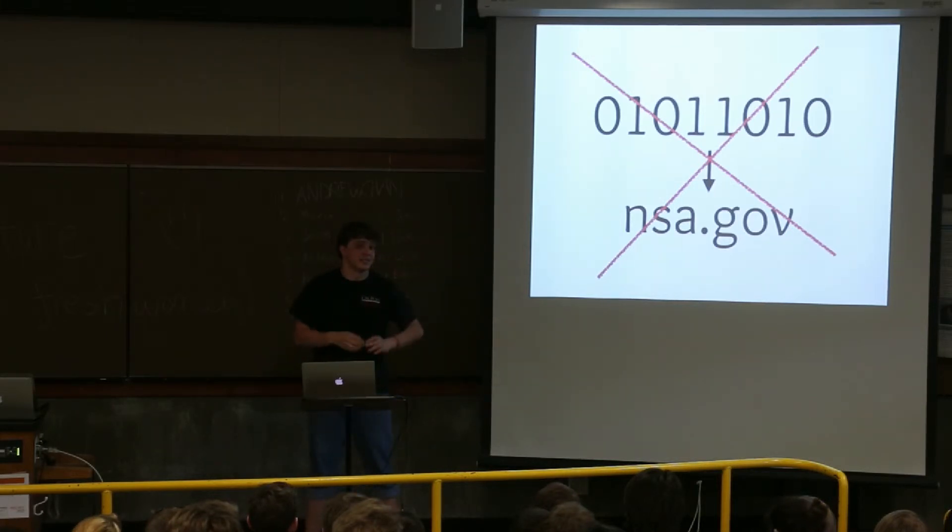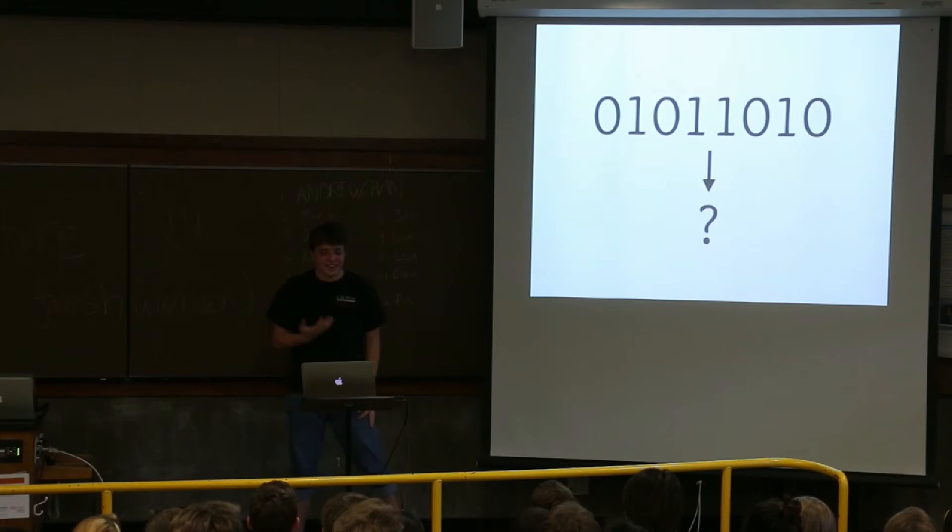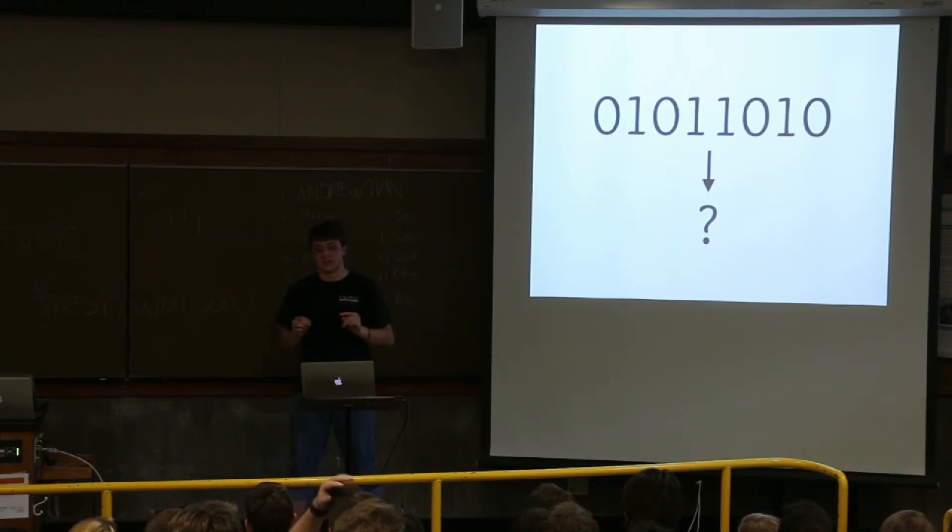So they can't send this data to NSA.gov. That would be bad. People could say, oh, we're losing data. Where's it going? Ah, NSA.gov. So where do they send the data instead to get it back to their servers? This is where having all those passive collectors comes in.